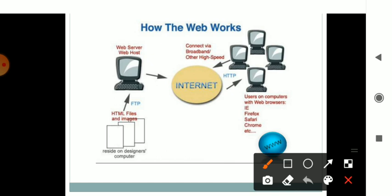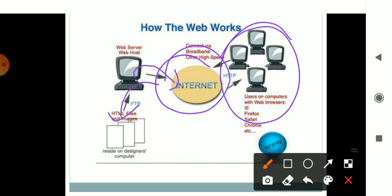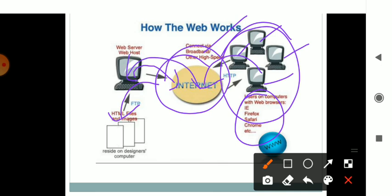How the web works: in the internet you have the web. The server gets information through the internet and that is fetched from HTML files created on one of the server pages. You have multiple systems getting connected through a broadband connection, and those systems may have different types of browsers. Each browser may access the internet, and that internet consists of various web pages which are fetched and stored in the server. This is how the web works.